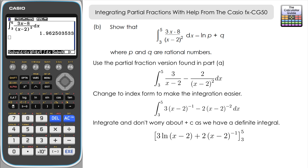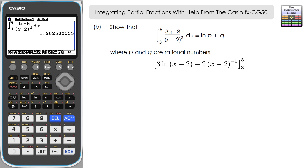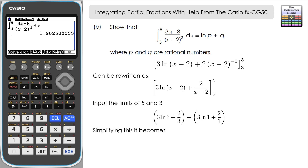Rewriting the result: 3·ln|x − 2| + 2 over (x − 2), evaluated between 5 and 3. Substituting x = 5: 3·ln(3) + 2/3. Substituting x = 3: 3·ln(1) + 2/1 = 3·ln(1) + 2. So the result is [3·ln(3) + 2/3] minus [3·ln(1) + 2].